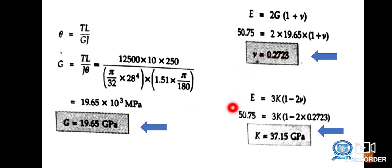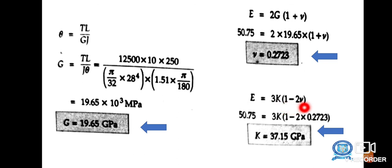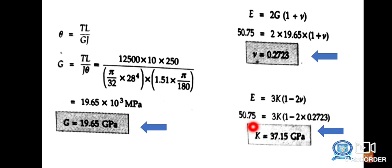Finally, we find the bulk modulus K using the relationship between Young's modulus and bulk modulus: E = 3K(1 − 2μ). Substituting E = 50.75 GPa and μ = 0.2723: 50.75 = 3K × (1 − 2 × 0.2723). Solving, we get K = 37.15 GPa. We have now calculated all three elastic constants: Young's modulus, bulk modulus, and shear modulus.